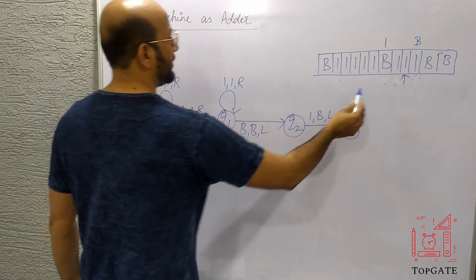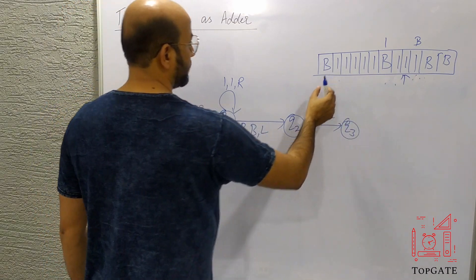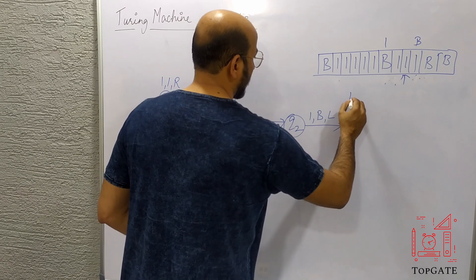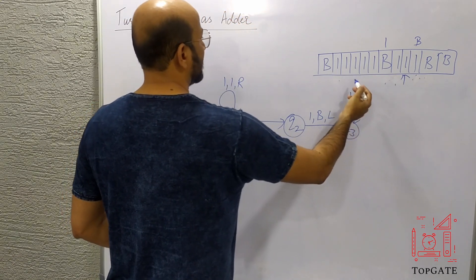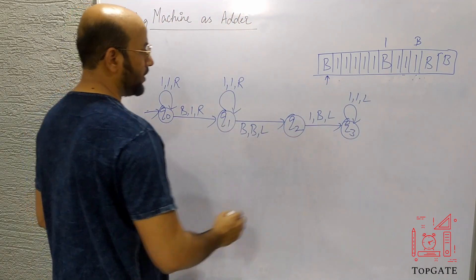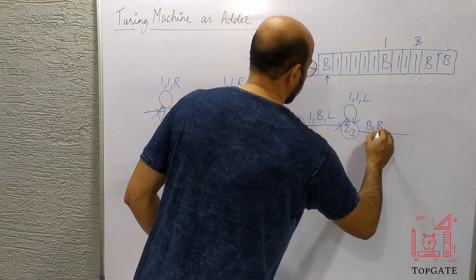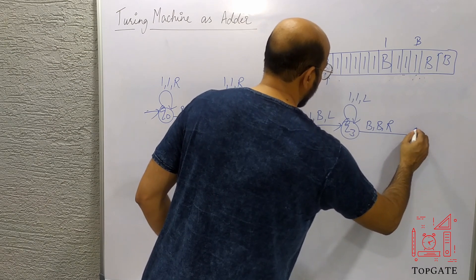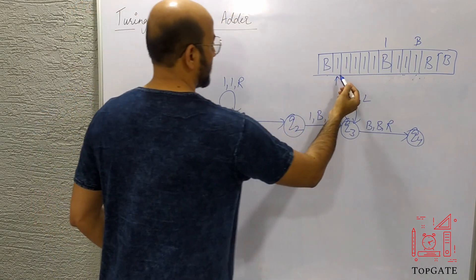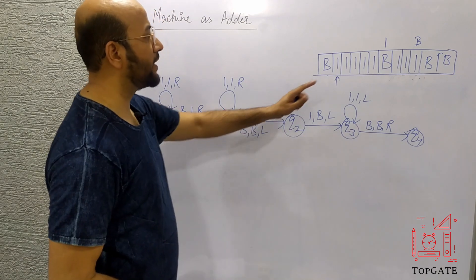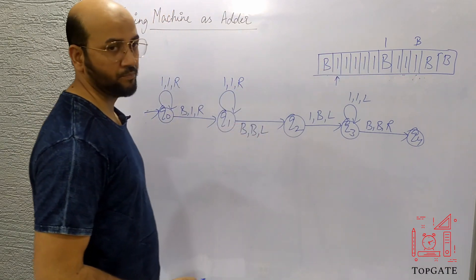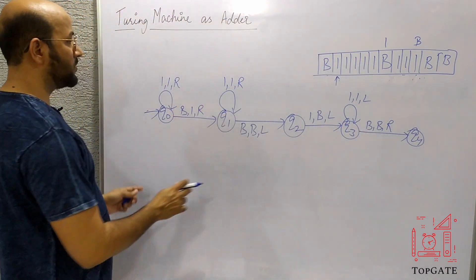At state q3, skip all the ones going left until a blank is found: if you find one, keep it as one and go left. The pointer skips all the ones and lands on the blank B before the output. From there, keep the B as B, go right, and move to state q4. The pointer now points to the first one of the output — eight ones displayed on the tape.